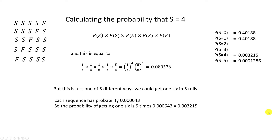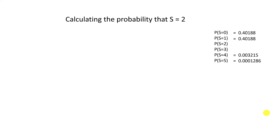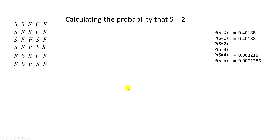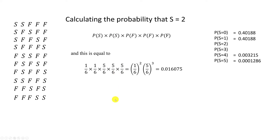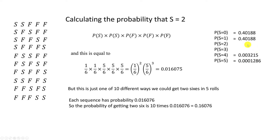That only leaves us with two harder cases. To calculate P(S=2), we've got to think about how many ways we can get two successes in five rolls. It turns out there are 10 different ways. The first of these has probability: success times success times probability of three failures, which equals that value. And because all 10 of these have the same probability, we just multiply that by 10 to get this number. So we can complete this entry in the probability distribution.